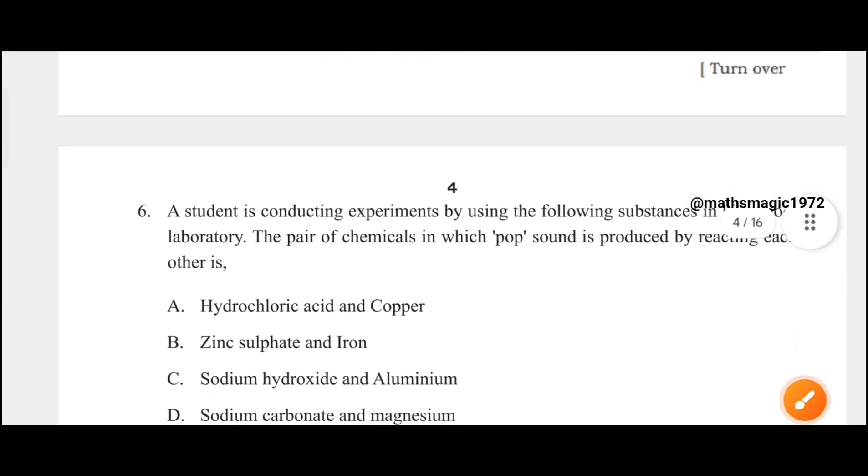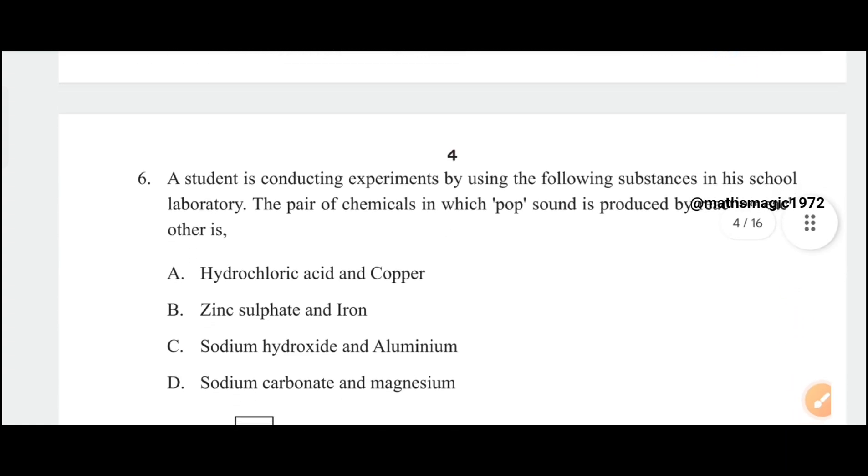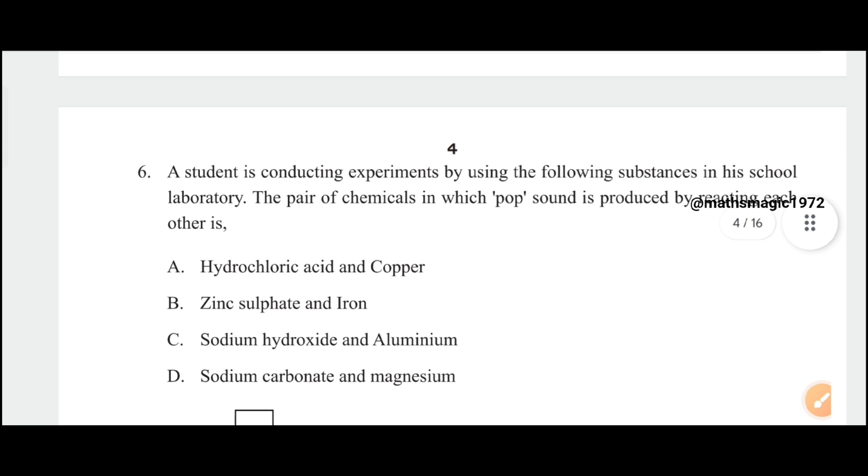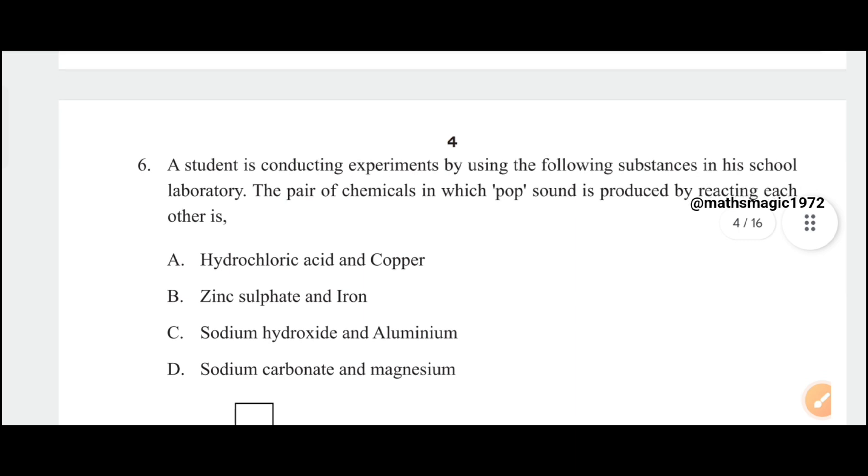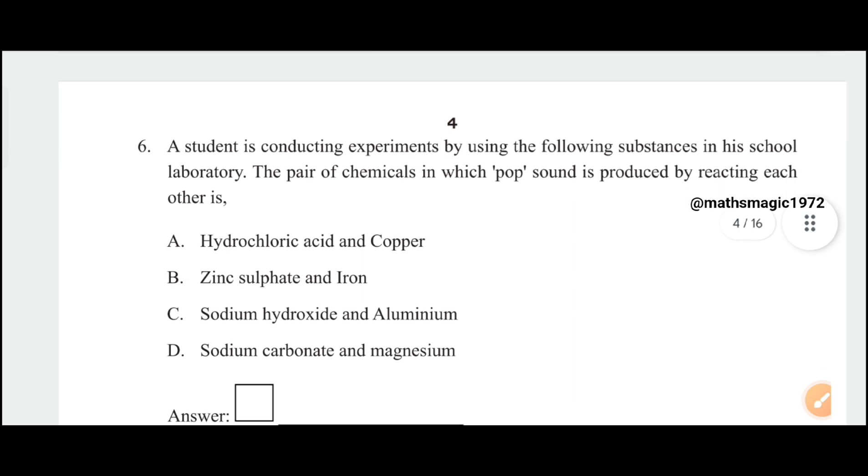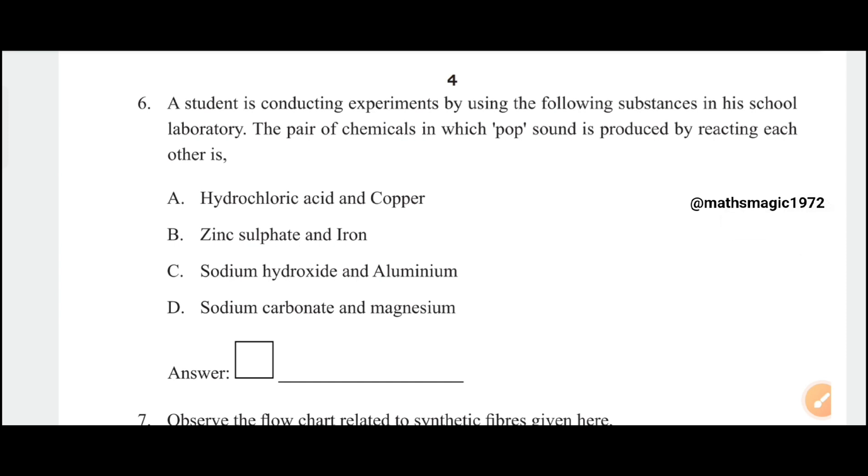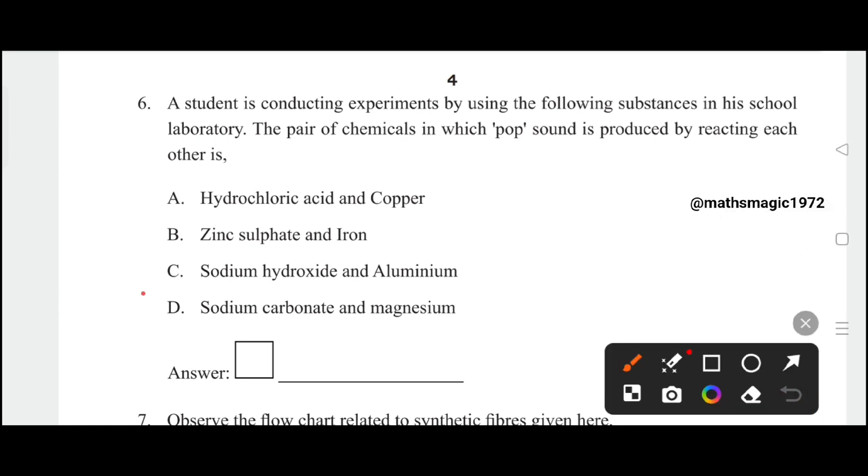A student is conducting an experiment by using the following substances in his school laboratory. The pair of chemicals in which pop sound is produced by reacting with each other is: A) hydrochloric acid and copper, B) zinc sulfate and iron, C) sodium hydroxide and aluminum, D) sodium carbonate and magnesium. The correct answer is option C, sodium hydroxide and aluminum.